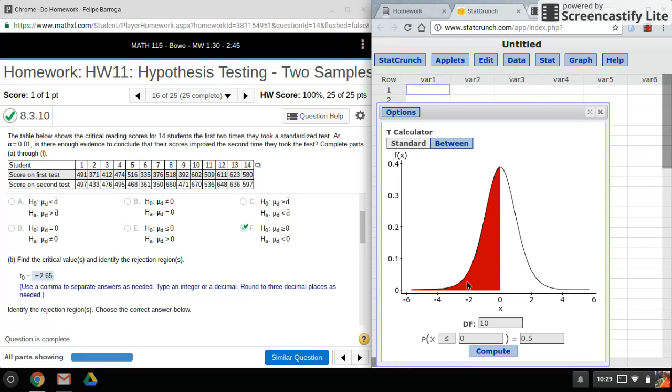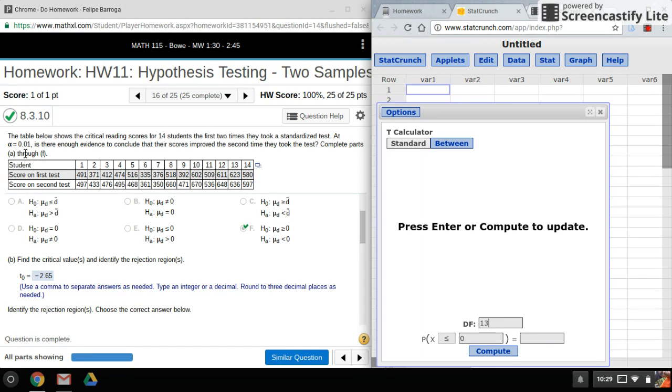So remember for one samples the degree of freedom was n minus 1, so I'll do 14 minus 1, that'll give me 13 degrees of freedom. And because it's a one tail test I can put in alpha here, and then I'll hit compute and there's my critical value.